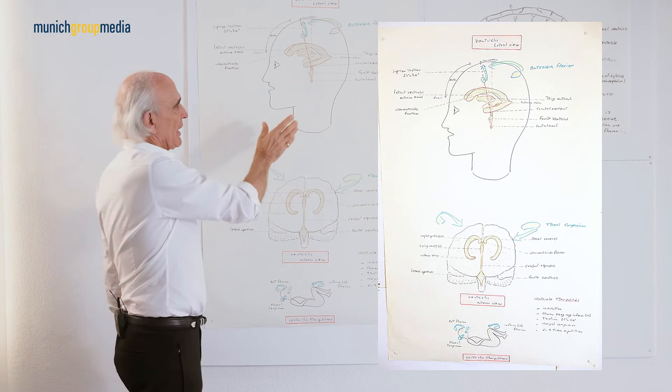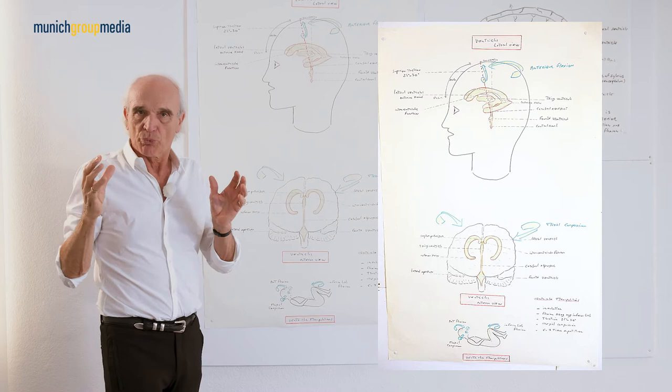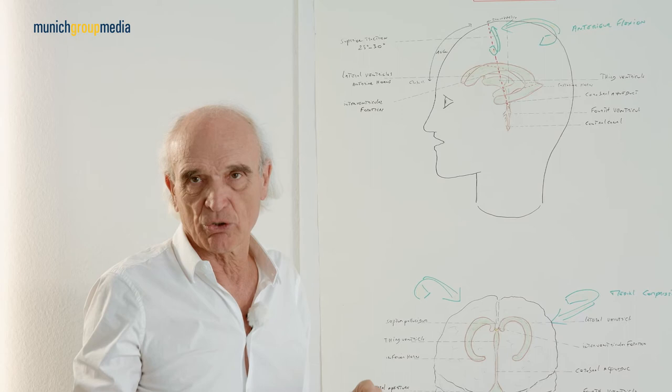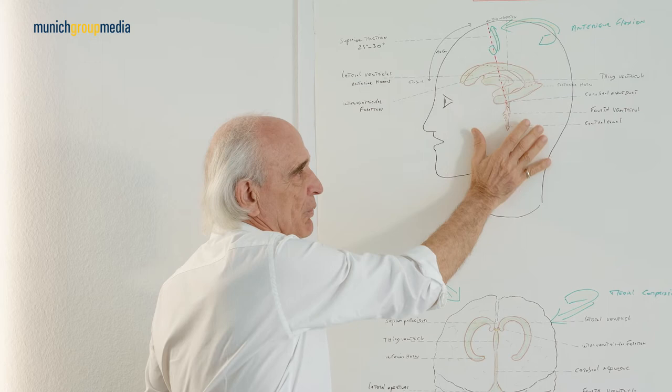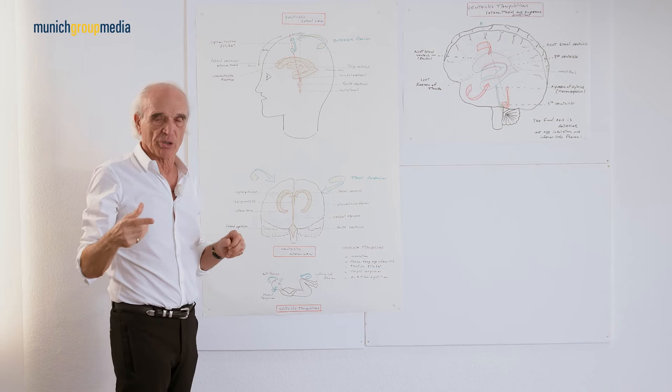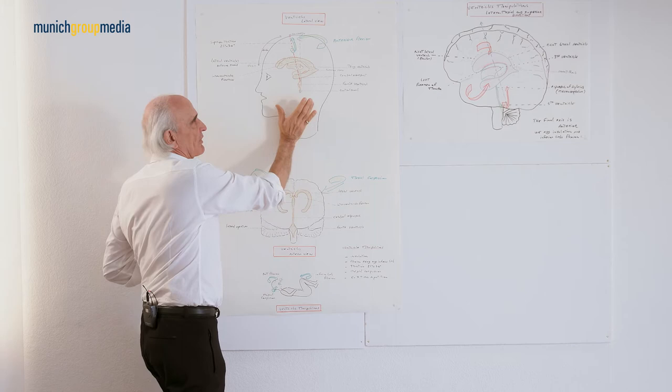When you breathe in, the negative pressure on the thorax increases and will attract all the liquid inside the thorax. That is why this cerebrospinal fluid goes to the jugular vein — the internal jugular vein. When the negative thoracic pressure is important, the fluid is attracted downward, caudally. When you breathe out, the pressure increases inside your thorax and all the liquid has a tendency to go upward. So that is why respiration is very important.